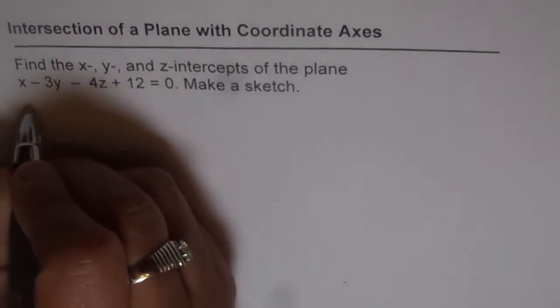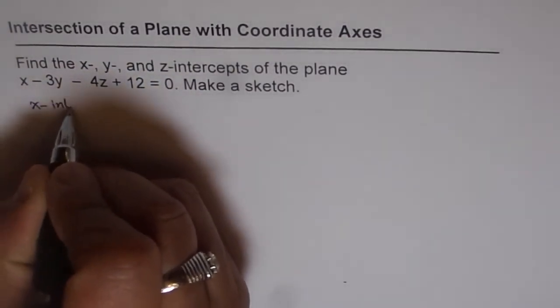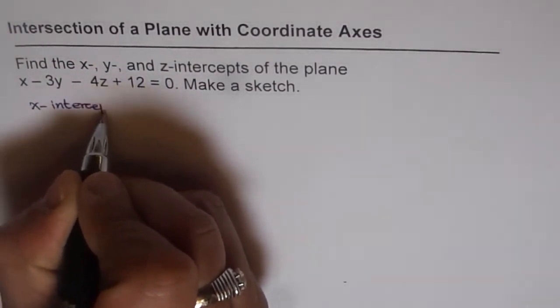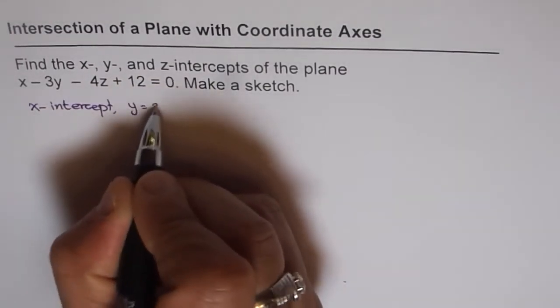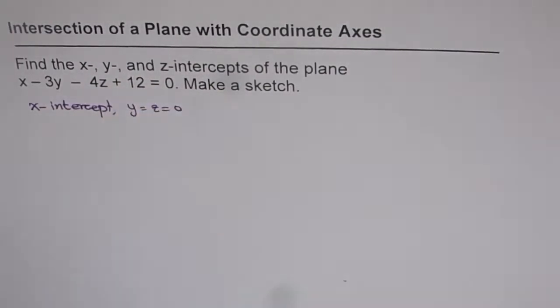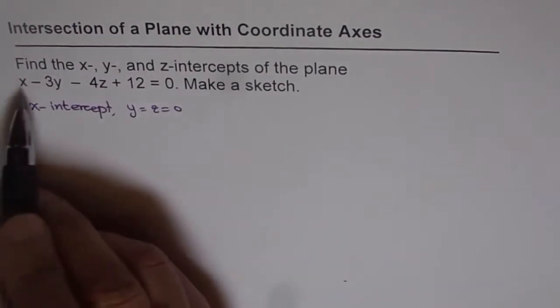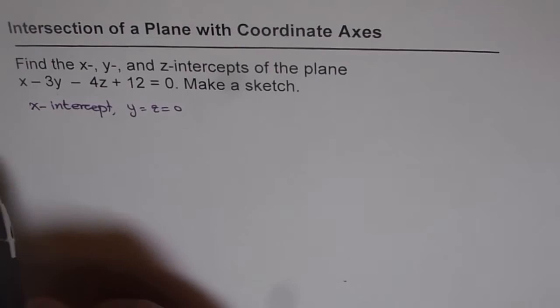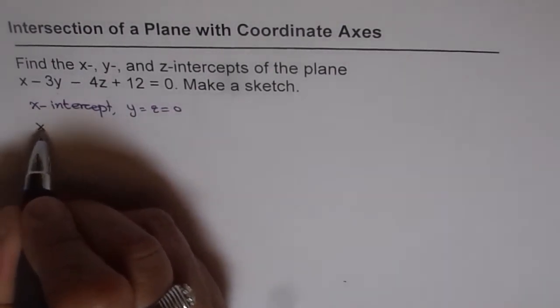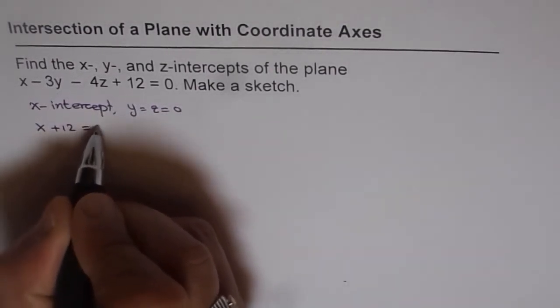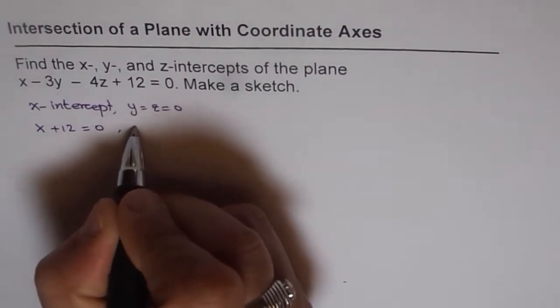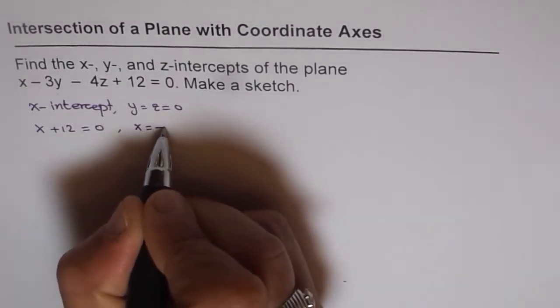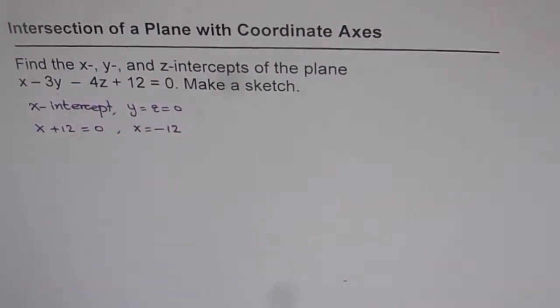Now, to find the x-intercept, we should substitute y and z equals to 0, right? So then we can get the x-intercept. In this equation of plane, if I substitute y and z as 0, then I get x plus 12 equals to 0, and that gives me x equals to minus 12. So that is the x-intercept.